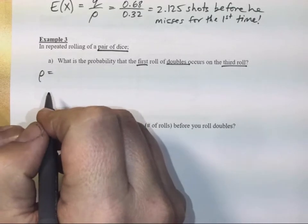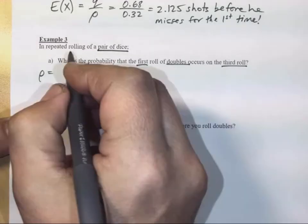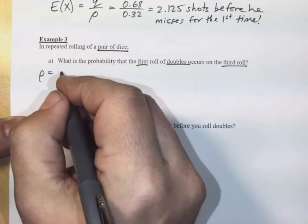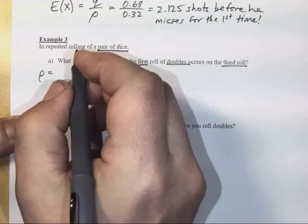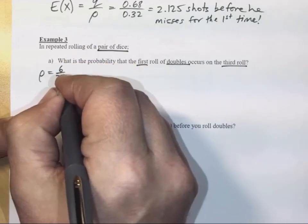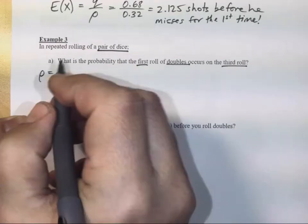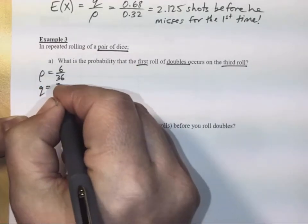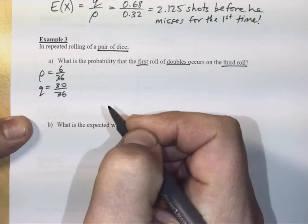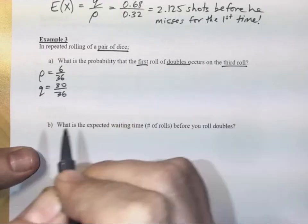What is it that we're waiting to happen? Well success to us is rolling doubles, and doubles, what's the probability of doubles using our sum chart, there's a 6 in 36 chance of that happening. Failure must be then 30 in 36, it's the other 30 outcomes that are not doubles.